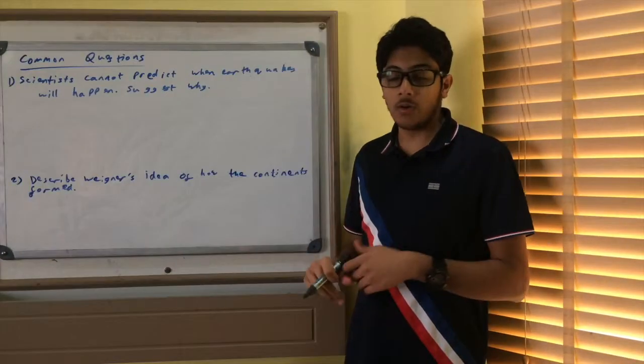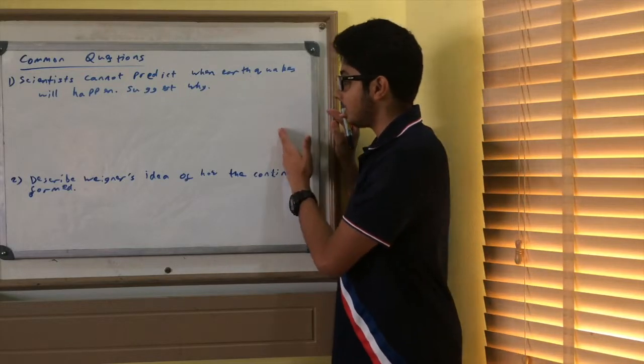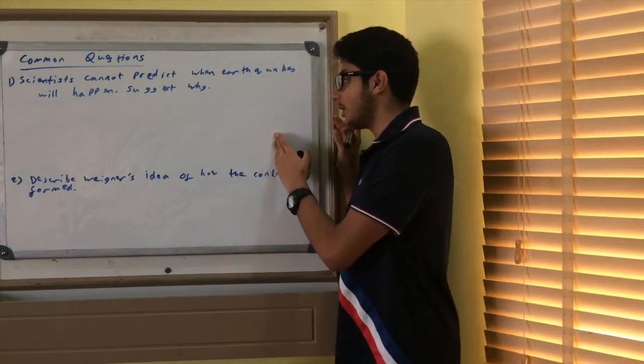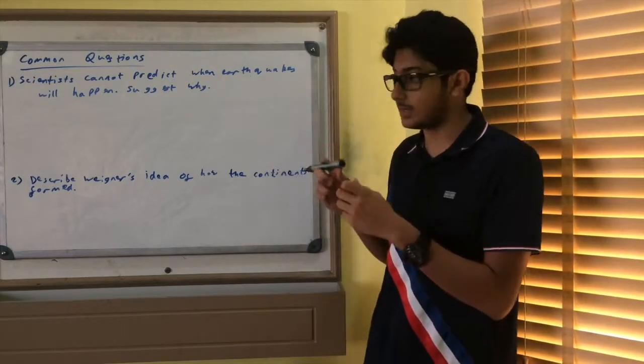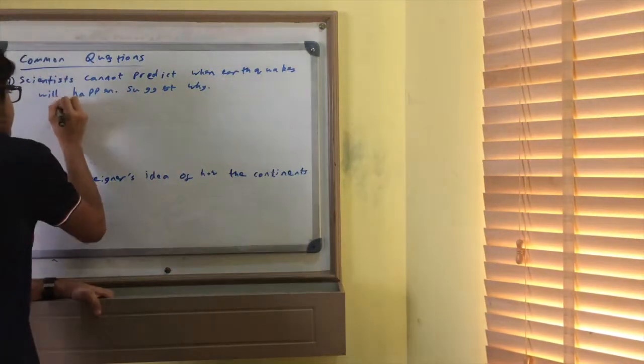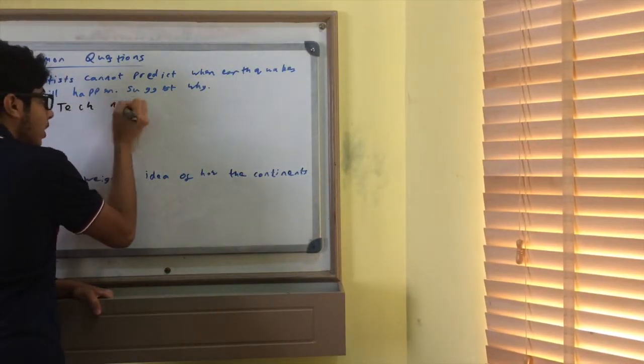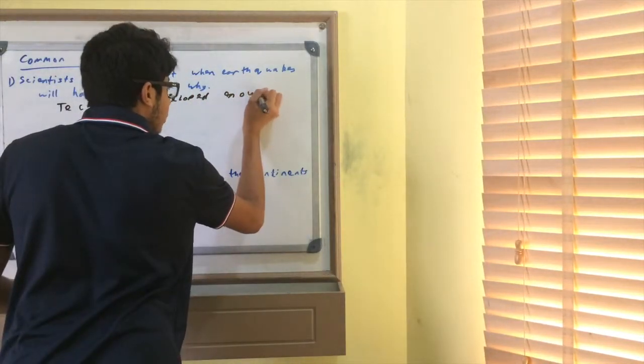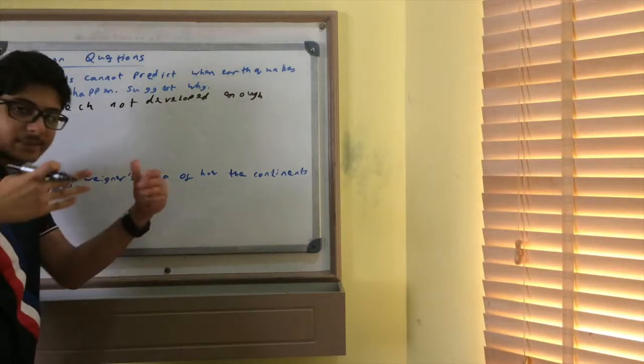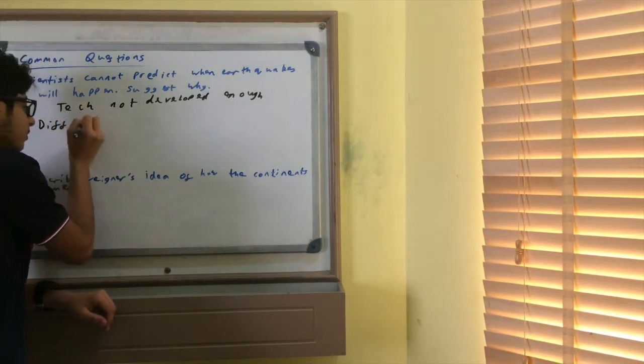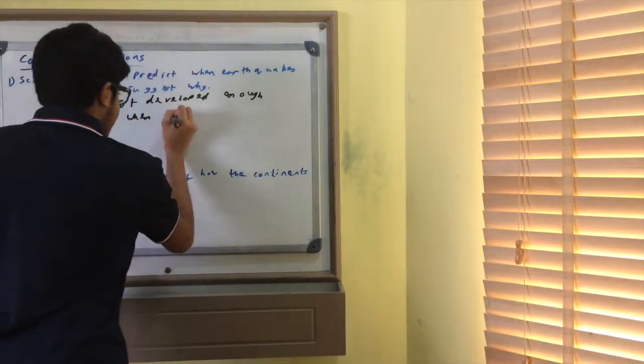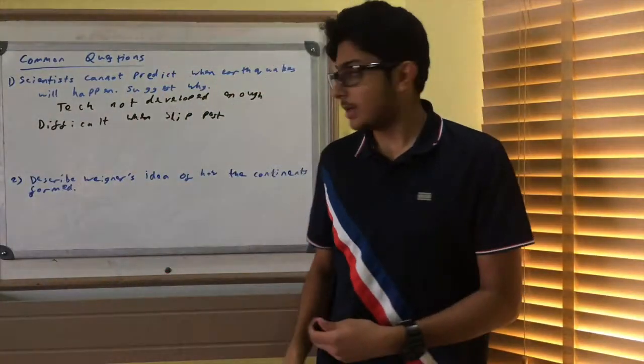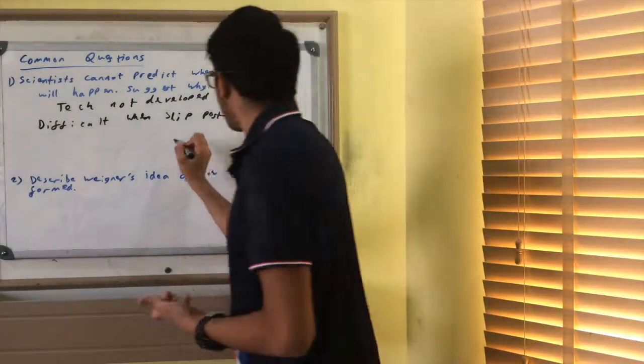Now, we're going to move on to some common questions. Okay, so, a common question is, scientists cannot predict when earthquakes will happen. Suggest why? This is a very common question, so do not be surprised if it shows up in your exam. Well, technology is not developed enough. And it is difficult to know when the plates will slip past each other. But another thing is, earthquakes are random.